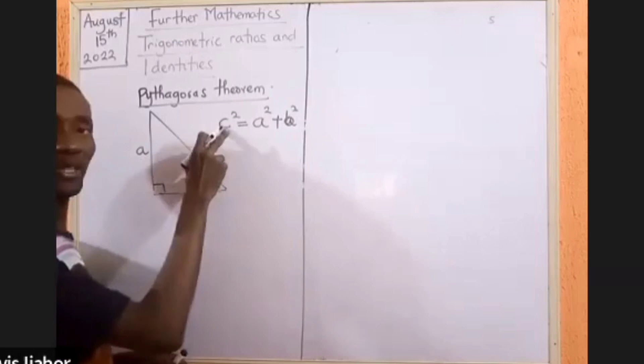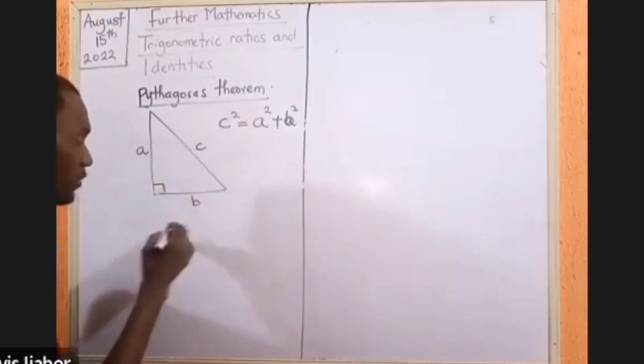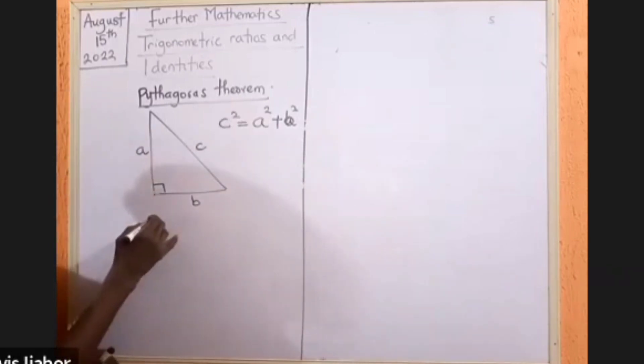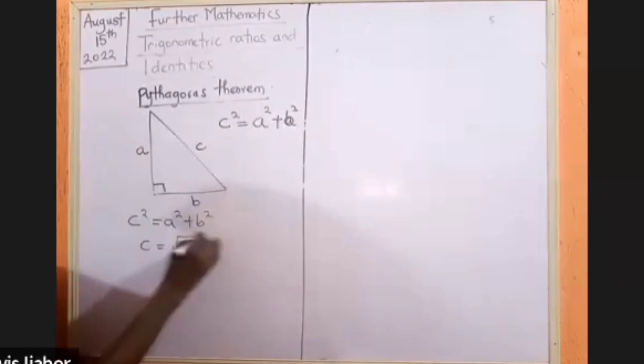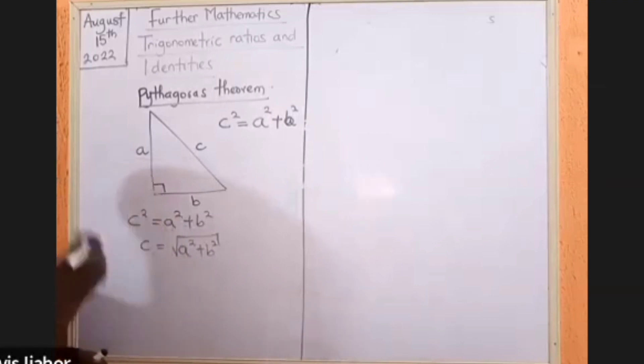So what that means, invariably from our knowledge of change of subject of formula, it means that c squared, which is a squared plus b squared, will mean that c will be equal to the square root of a squared plus b squared. We can also make a the subject of the formula.